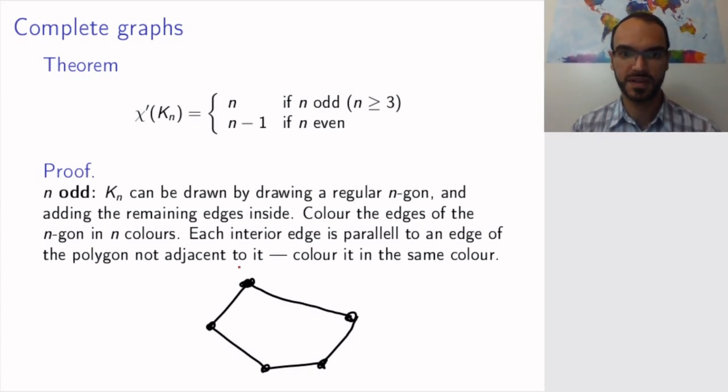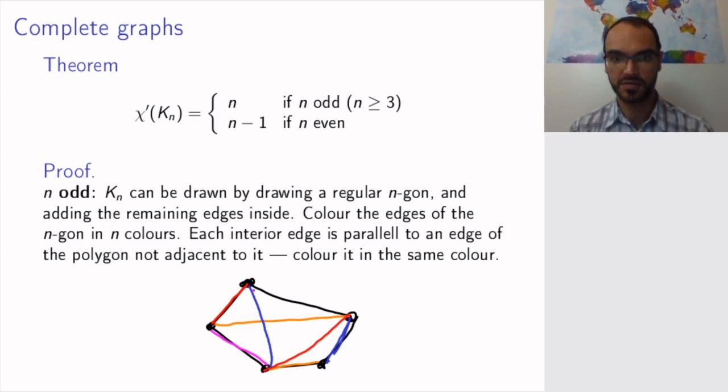But here we draw first the polygon and then we color the outer edges using five different colors: red, blue, black, let's say yellow and pink. And then for the edges inside, I will have one edge that goes between these vertices and that is parallel to this vertex. This is a feature of the complete graph Kn with n odd, so I color it in the same color. And that's okay because this edge is not going to be adjacent with this edge. And I continue doing that, so this one is parallel to the red one, this one is parallel to the blue one, and this one is parallel to the pink one, and finally this one is parallel to the black one.